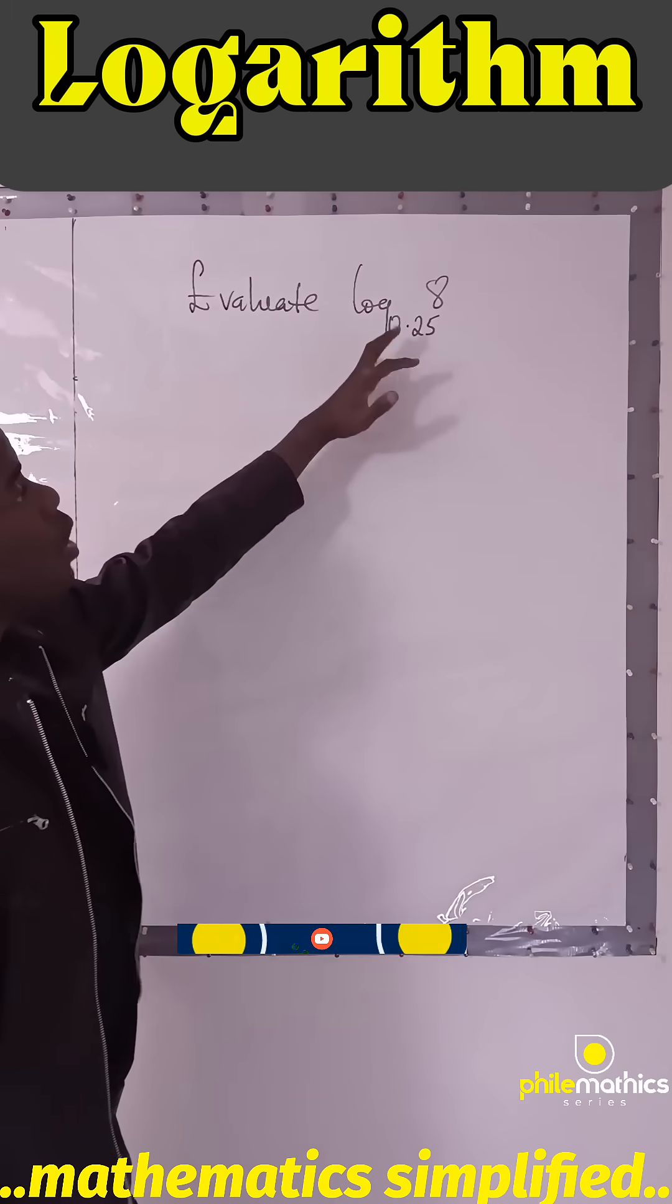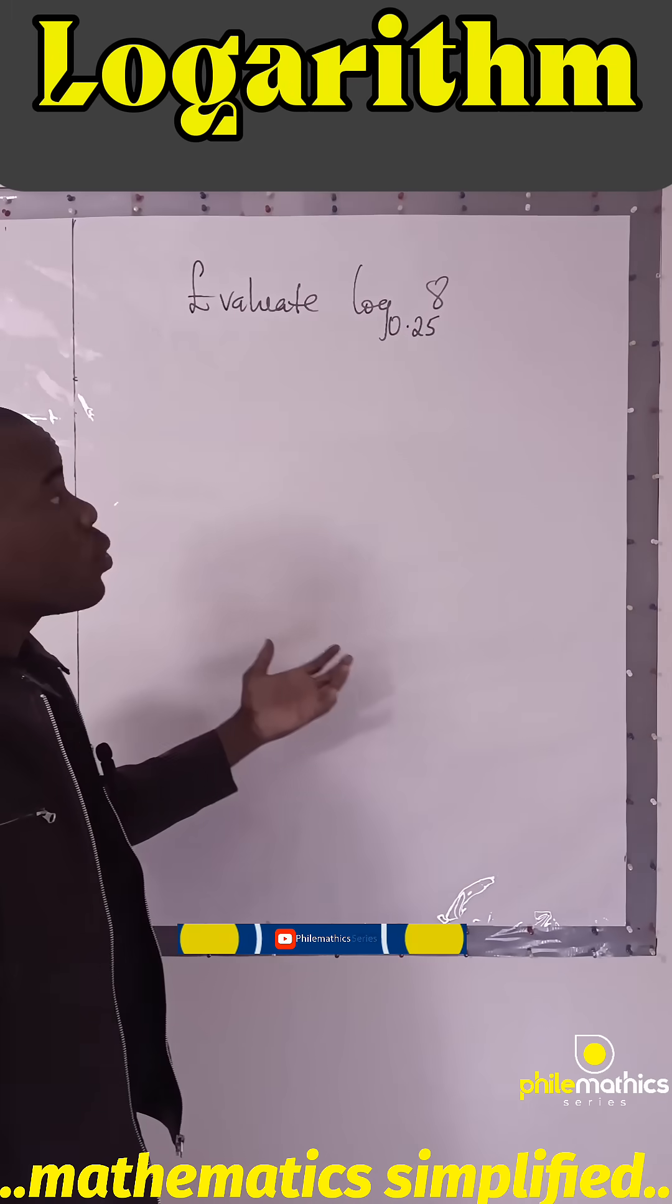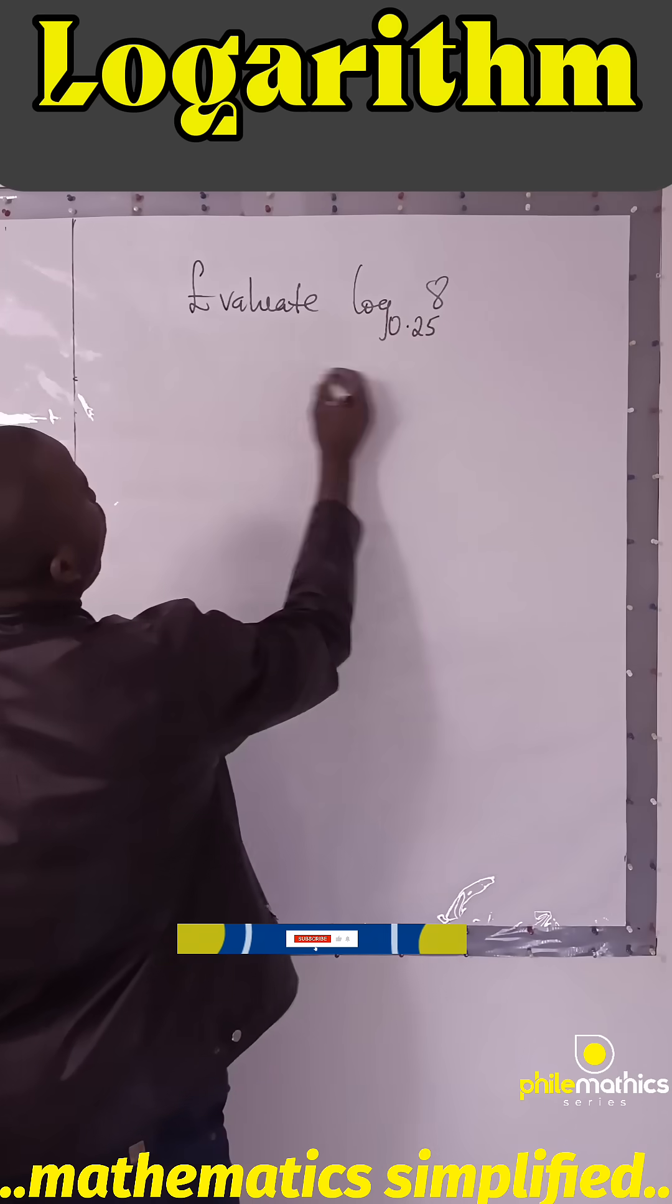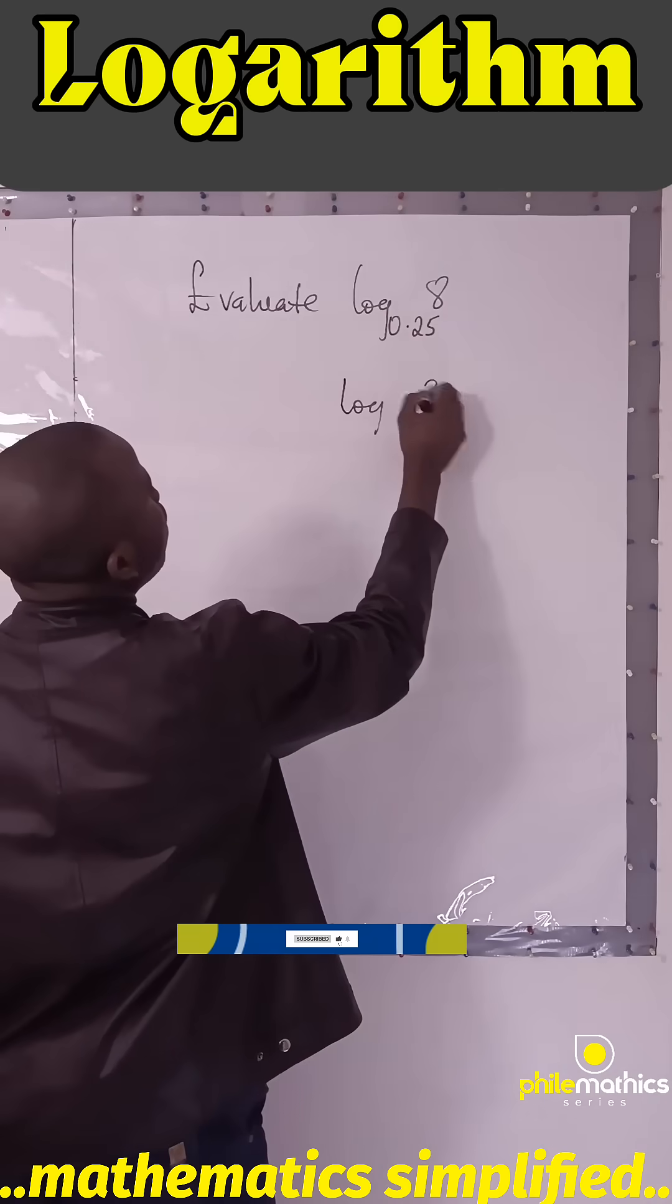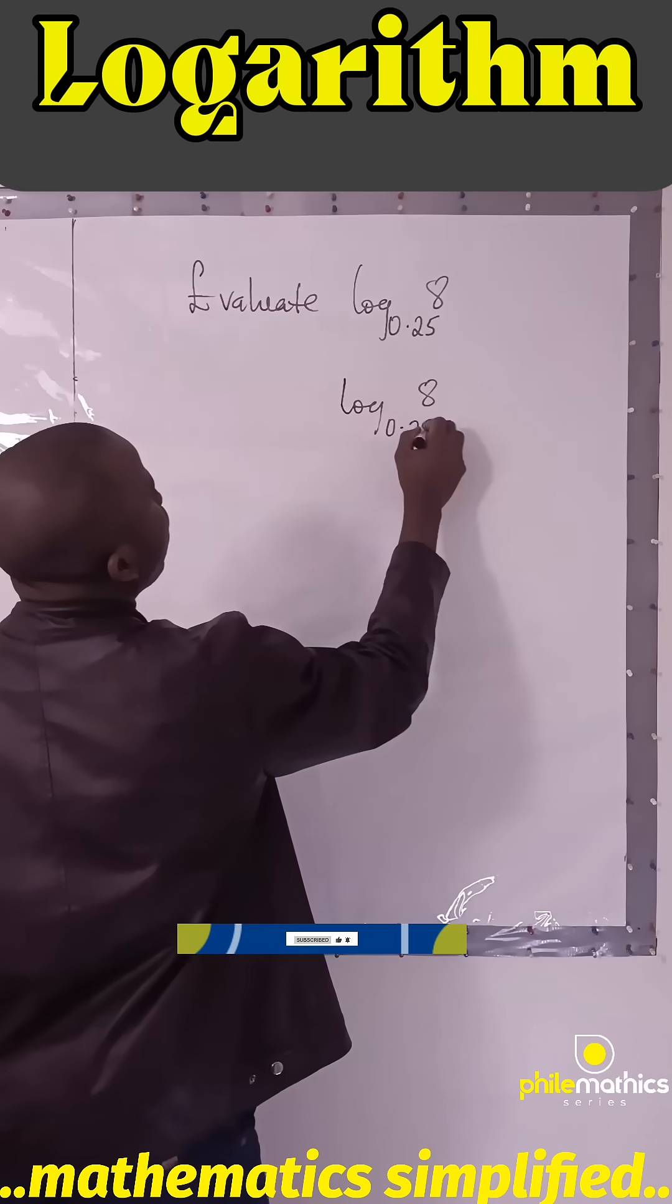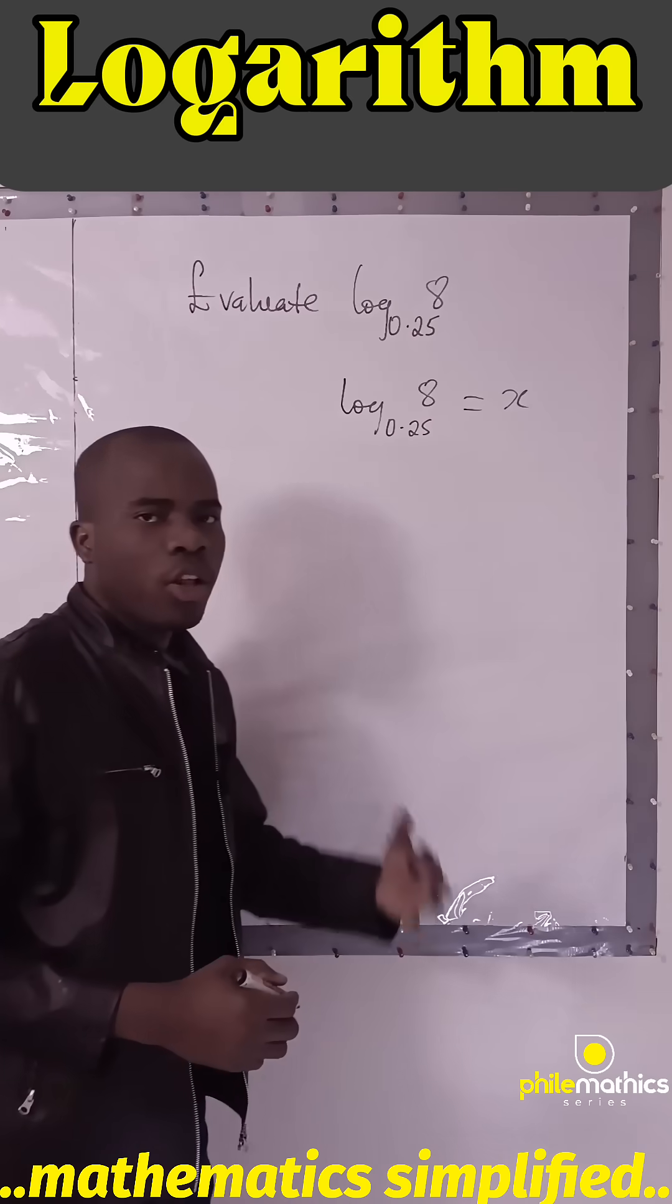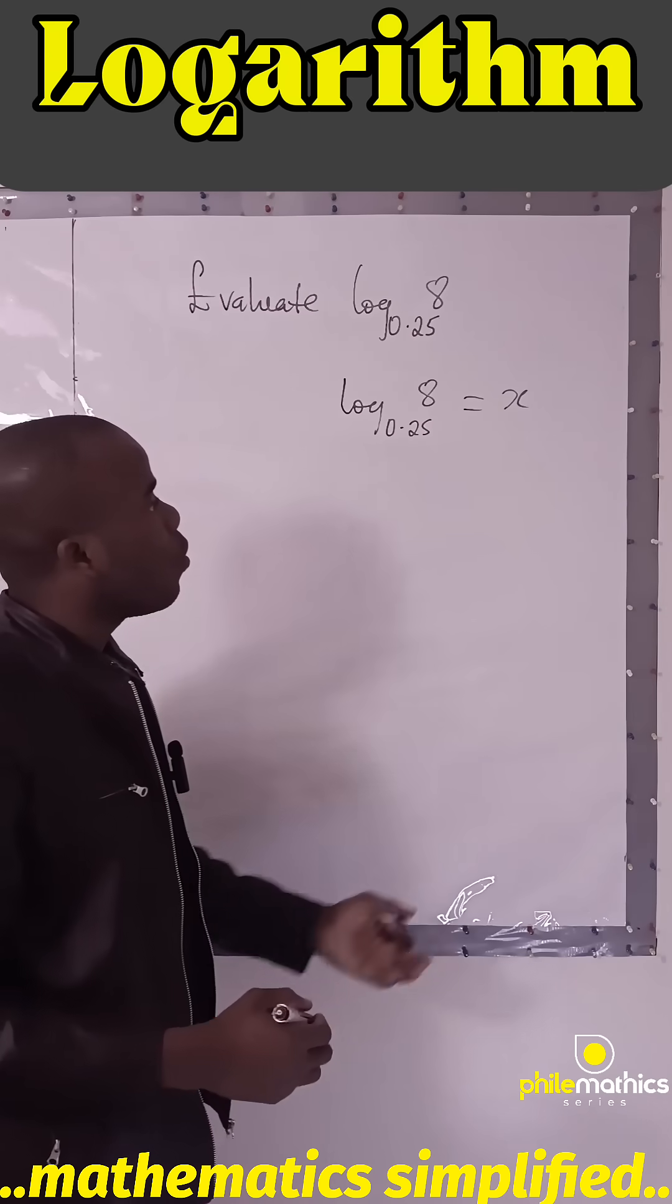We are asked to evaluate this logarithm without using tables. Let's assume the result is x, so log base 0.25 of 8 equals x. Remember, for us to convert a logarithm to an index form, we